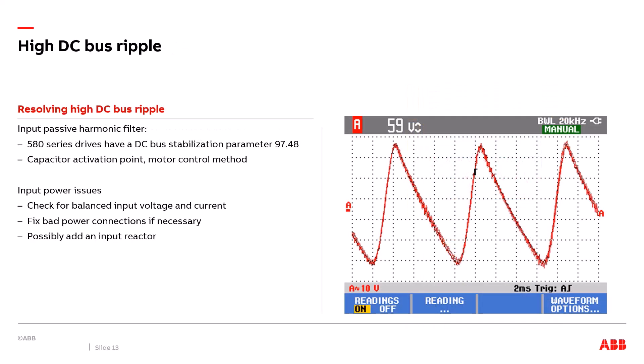Now that we know how to look at the DC bus on a scope what happens if we see a high voltage peak to peak ripple on the DC bus and we have the drive tripping out on faults. How do we resolve the problem? Well it depends on what's causing the problem. The most common cause of a high voltage DC bus ripple is because an input harmonic passive filter has been attached to the front of the drive to reduce input harmonics on the electrical system. That passive harmonic filter's capacitors usually will start to resonate with the drive's DC bus capacitors. So how do we fix that? On the ABB ACH 580 series drive we actually have a parameter called DC bus stabilization which is parameter 9748 that can be adjusted to help resolve the problem. Other solutions are to adjust that capacitor activation point or when the contactor for the capacitor and the filter pulls in or also the motor control method maybe trying a vector control method instead of scalar.